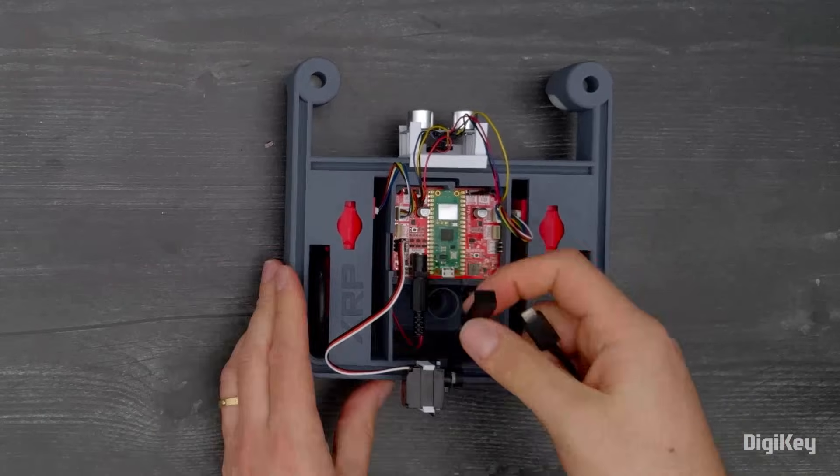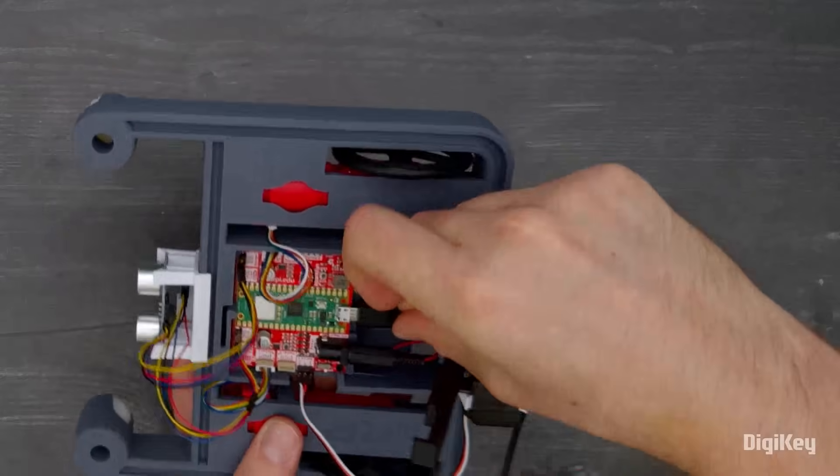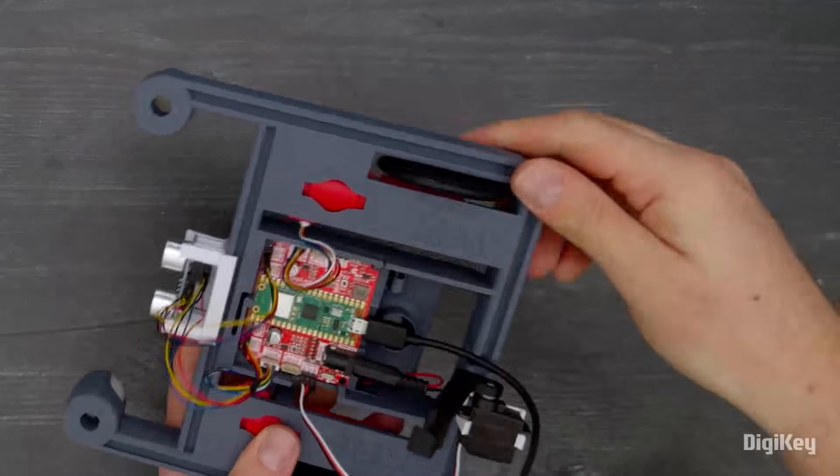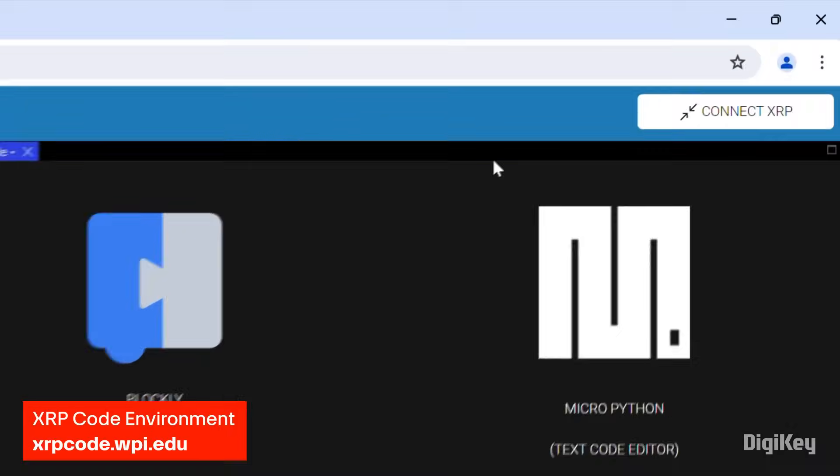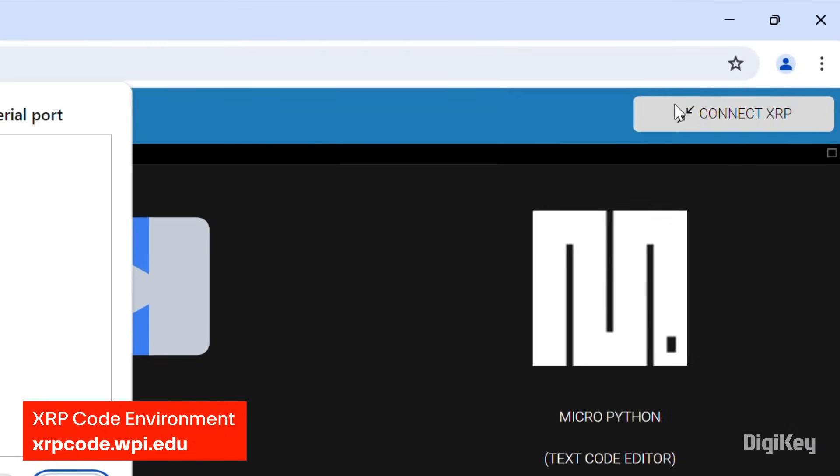Next, connect your assembled XRP kit to your PC using a micro USB cable. Then, go to the online XRP code environment and click Connect XRP.